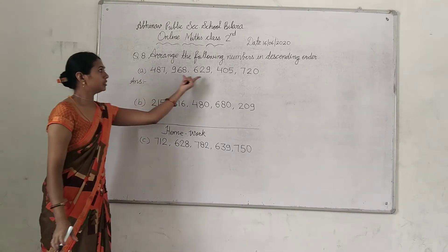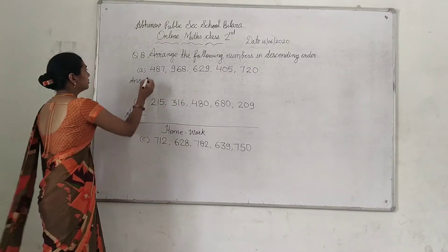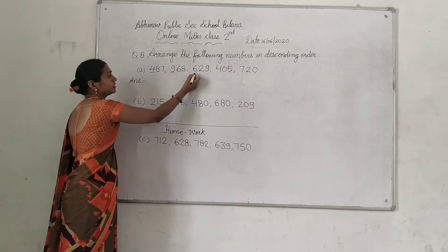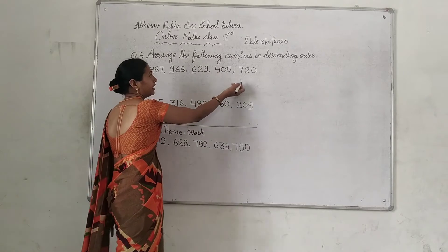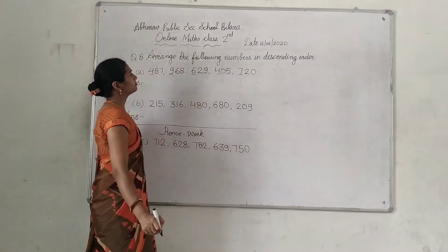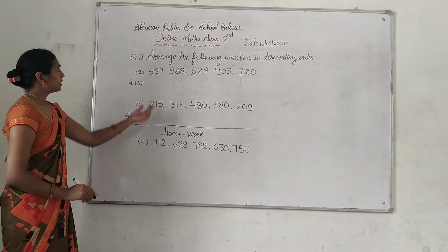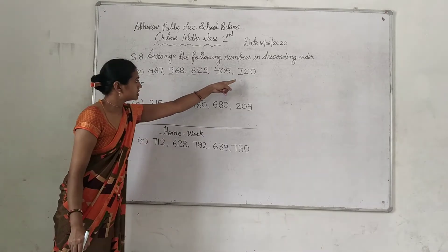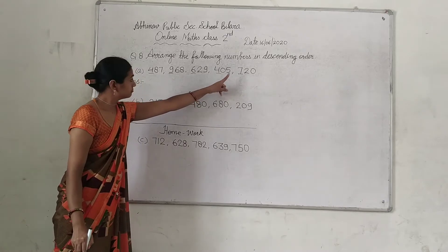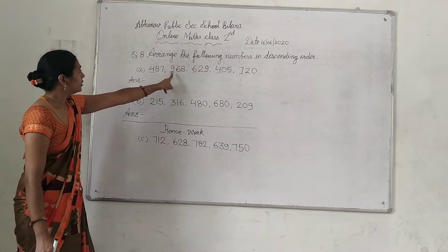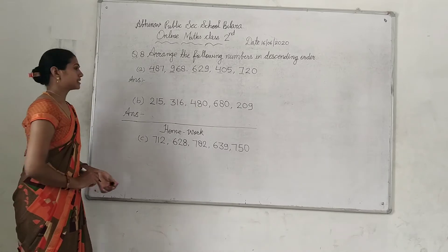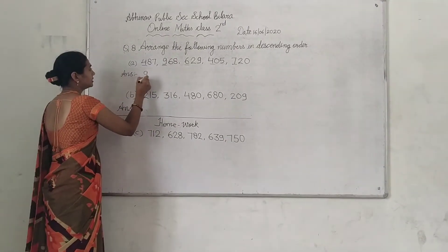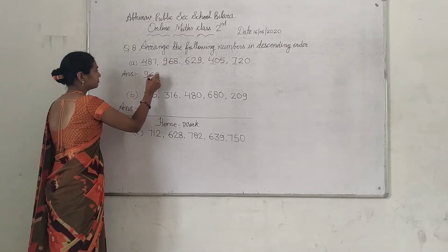All are three-digit numbers. Looking at the hundreds place: 400, 900, 600, 400, and 700. The biggest hundreds digit is 9, so 968 is the biggest number. You will write 968 first.